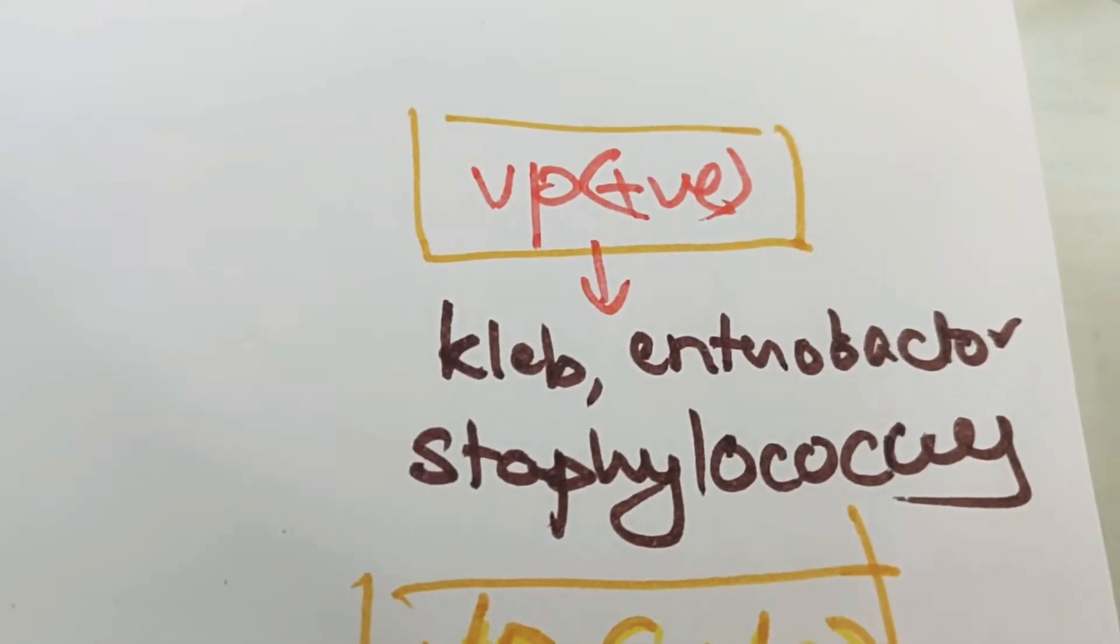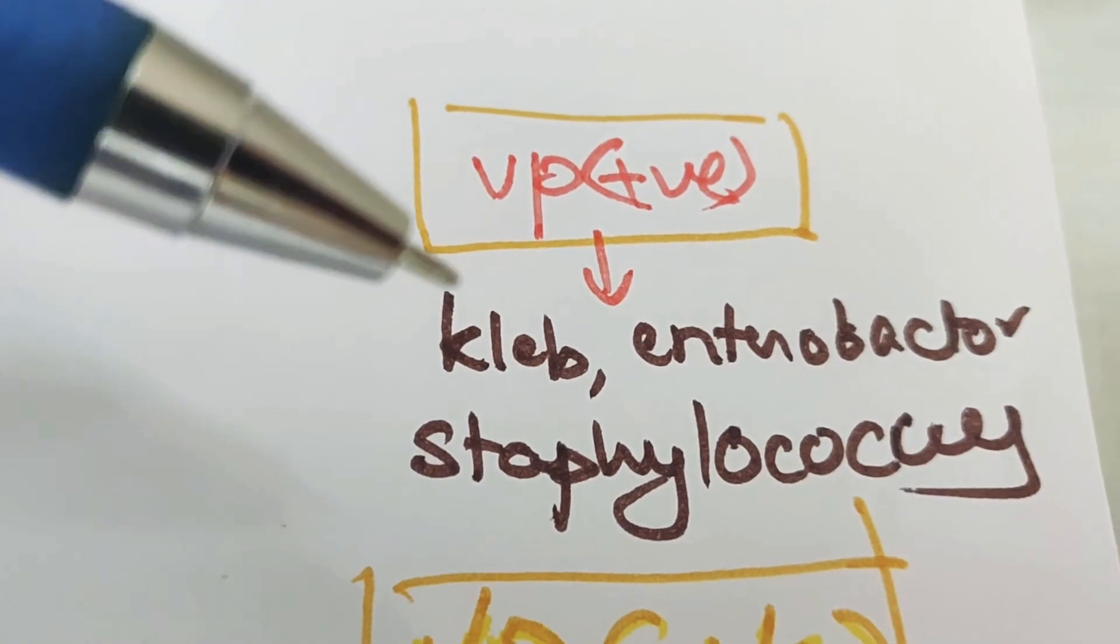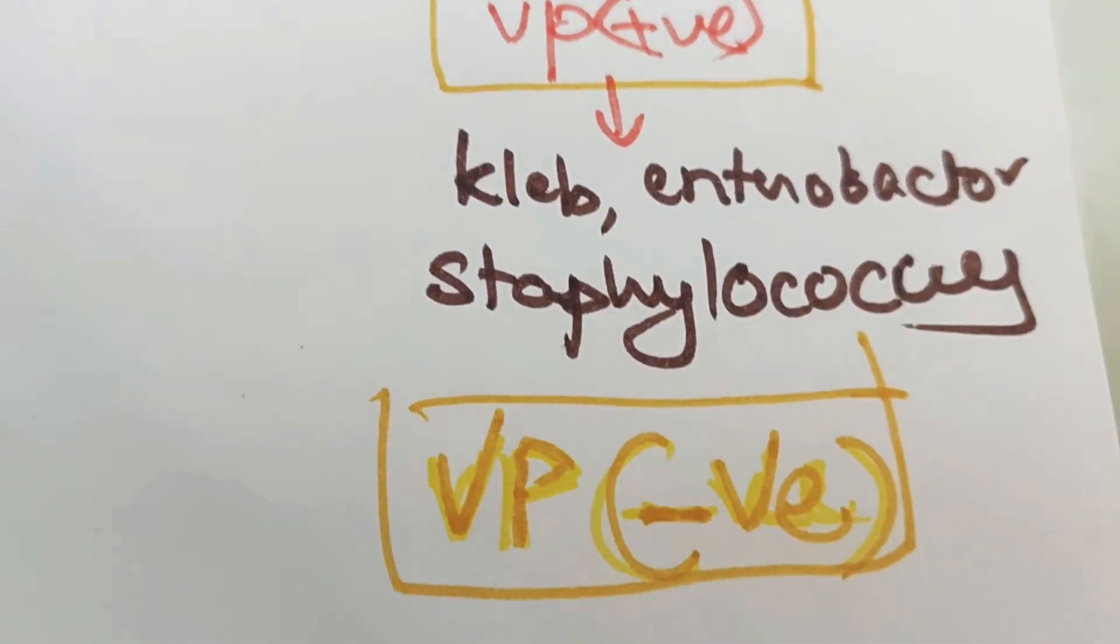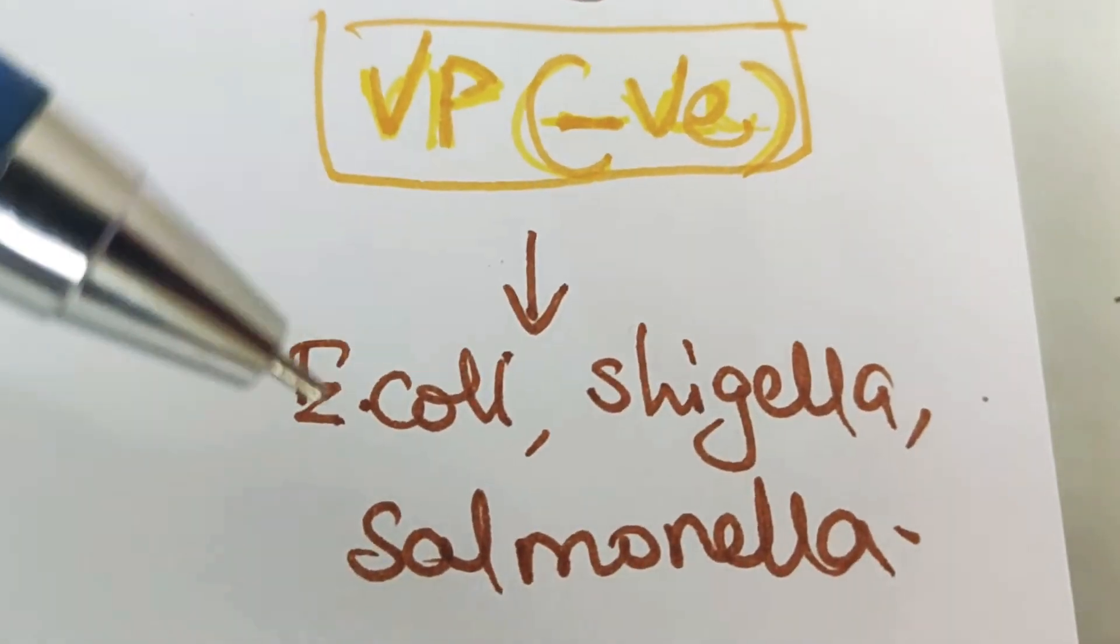VP positive organisms are like Klebsiella, Enterobacter, Staphylococcus. VP negative are E. coli, Shigella,